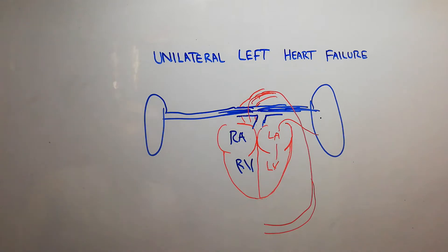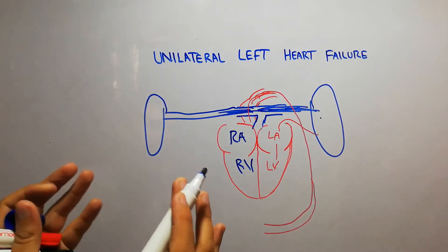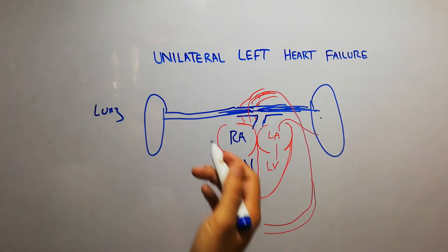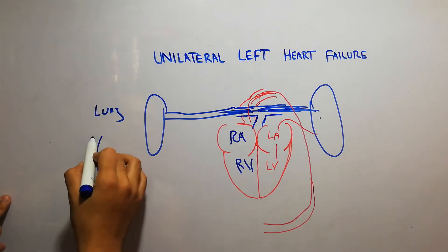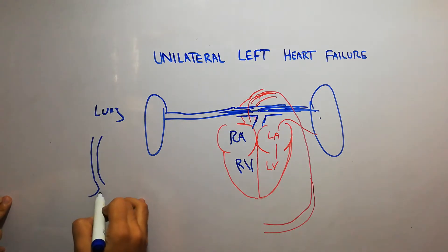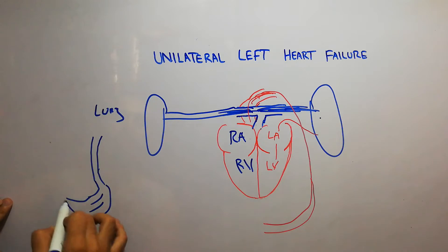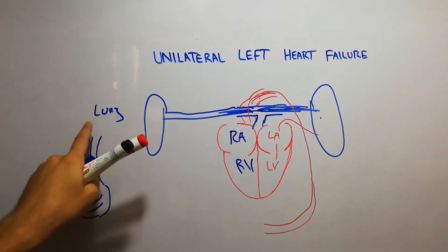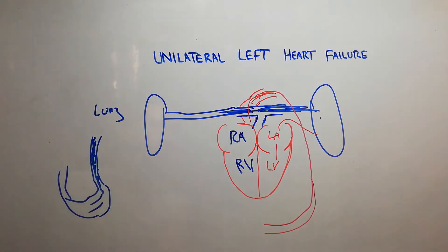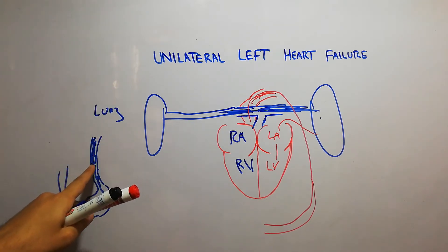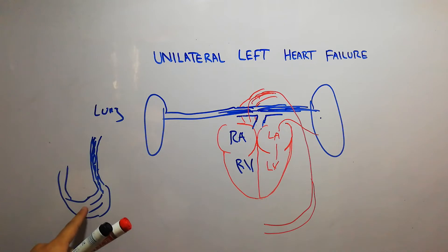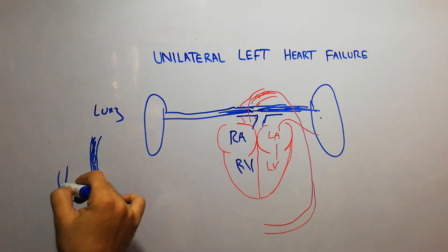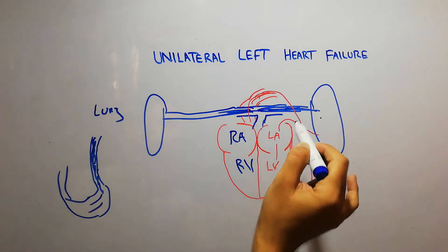Blood will continue to accumulate in the lungs. Inside the lung, blood is present in different arterioles, capillaries, venules, and veins. The pulmonary artery takes blood to the lungs and the pulmonary vein takes oxygenated blood back to the heart.